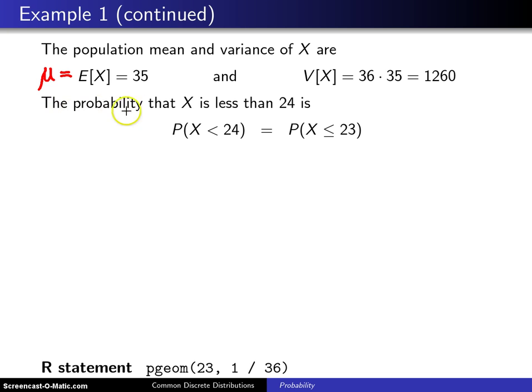Finally, the last thing to calculate is the probability that the random variable X is less than 24. So the probability X is less than 24 is the probability X is less than or equal to 23, because this is a discrete random variable defined on the non-negative integers. And you will notice the probability a random variable being less than or equal to something is the CDF. So this is the CDF of the geometric random variable evaluated at 23.